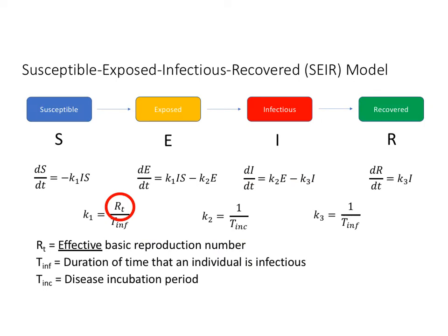When we look at an SEIR model, one of the key parameters is the effective basic reproduction number, which I have circled here.